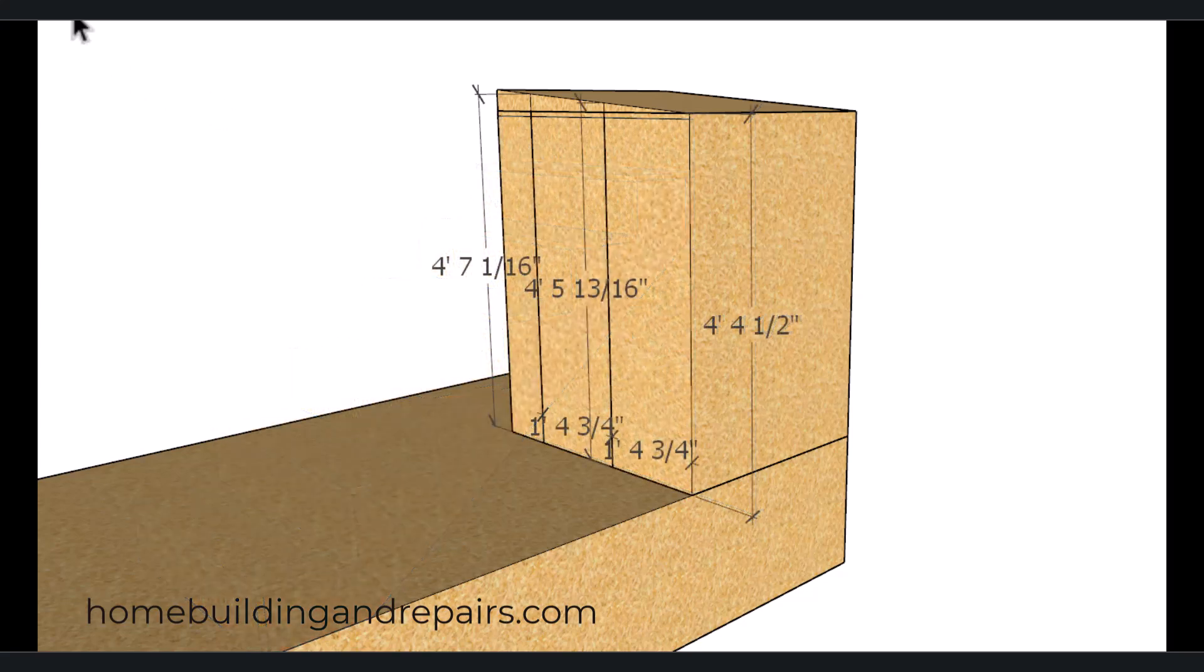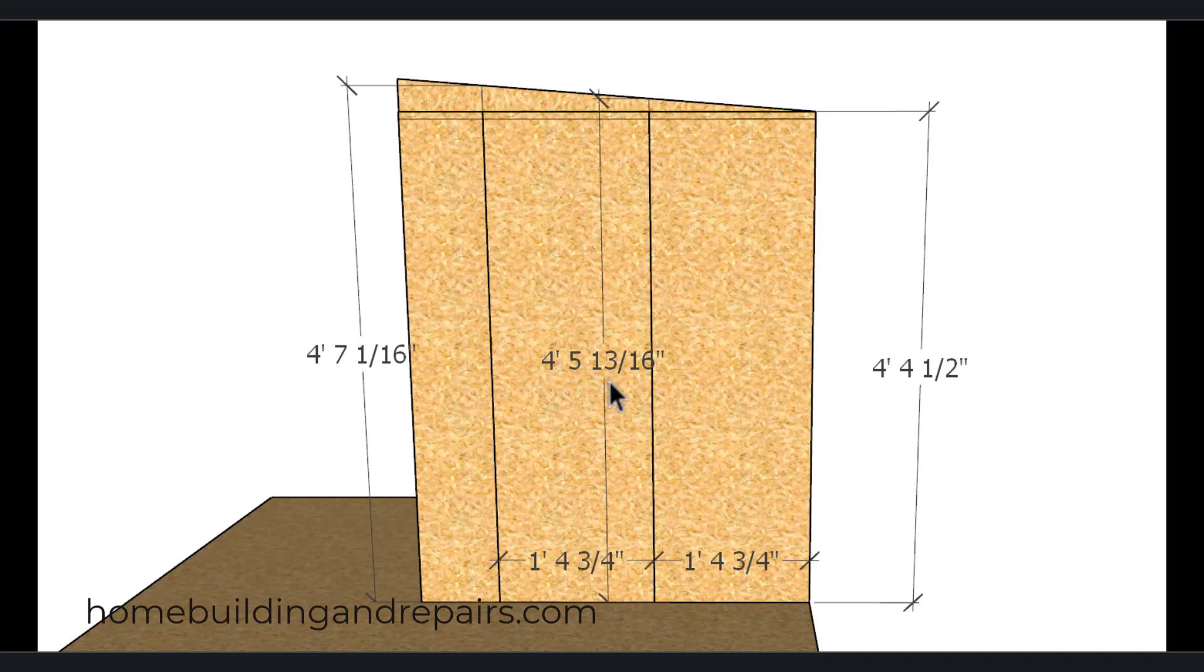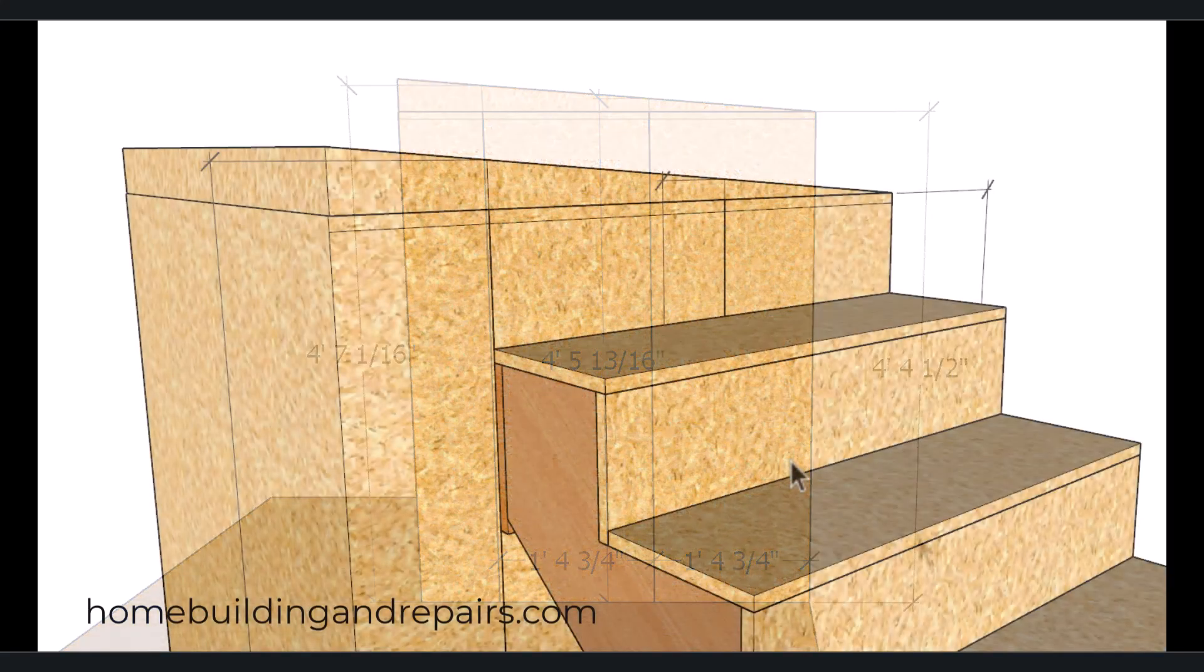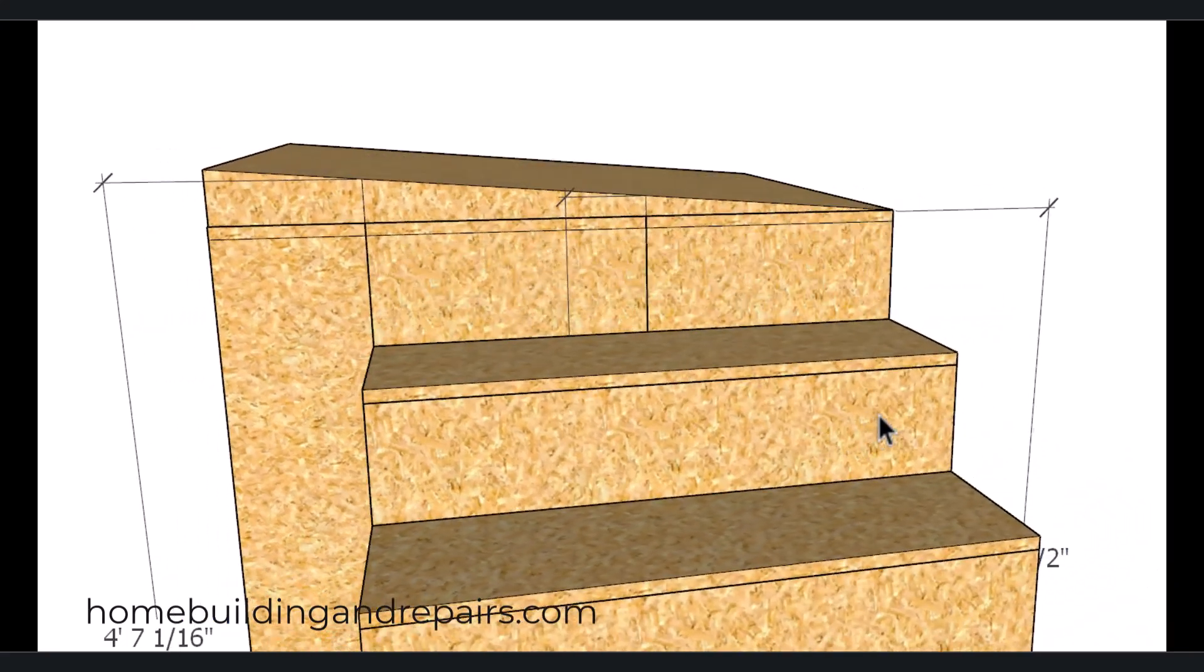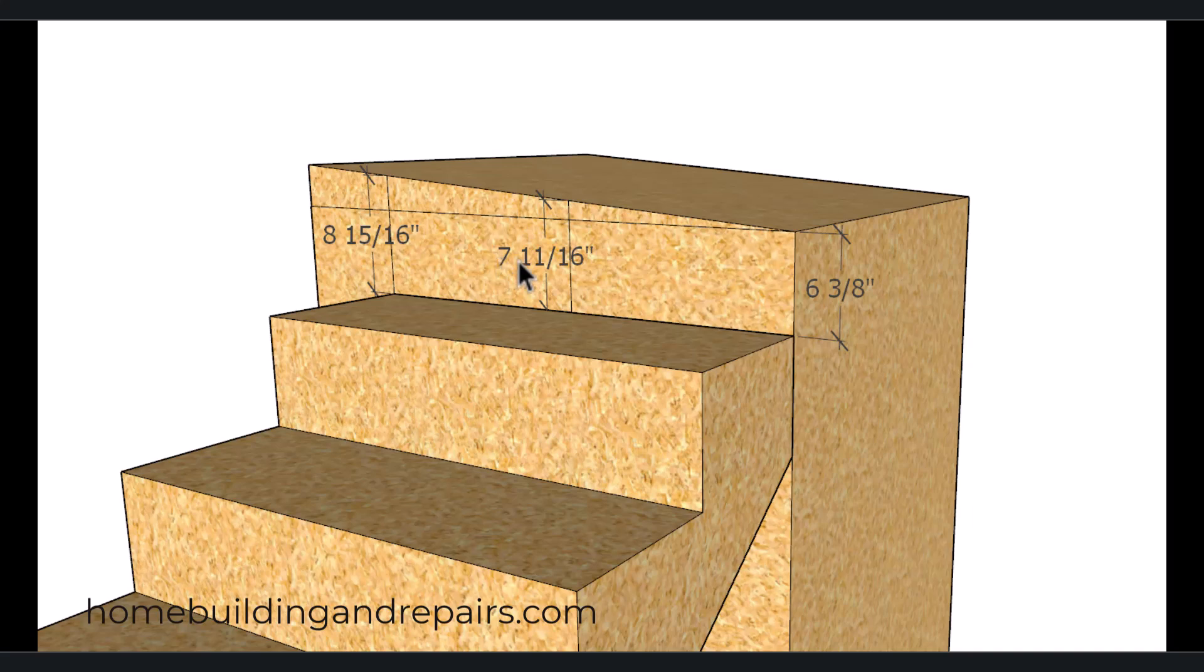And our new measurement for our total overall rise will be four foot five and thirteen sixteenths. And we'll simply divide the amount of risers into that number, the total rise on the stairway, to get our new individual riser height which is going to be around seven and eleven sixteenths of an inch.